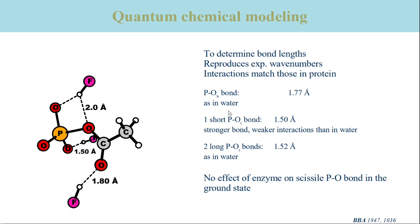Such information cannot be obtained from X-ray crystallography because the resolution of most structures is not good enough to detect bond length changes, and because the phosphoenzyme E2P is an intermediate in the ATPase reaction cycle and cannot be crystallized. Instead, phosphate analogues like beryllium fluoride are used to crystallize the state, which implies that no information on phosphate bonds can be obtained.